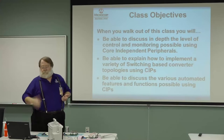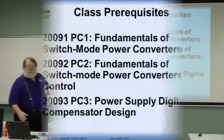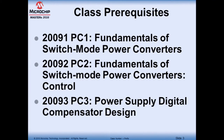To understand this class, you need three pieces of background: first, course 20091 — Fundamentals of Switch Mode Power Converters — explains how switch mode converters work, why feedback is important, and how PWM regulates the output. Second, course 20092 — Fundamentals of Switch Mode Power Converter Control — covers how a microprocessor interfaces into SMPS designs. Third, course 20093 — Power Supply Design Using Digital Compensation — covers using DSP functionality in the feedback path for the loop filter and error amplifier.